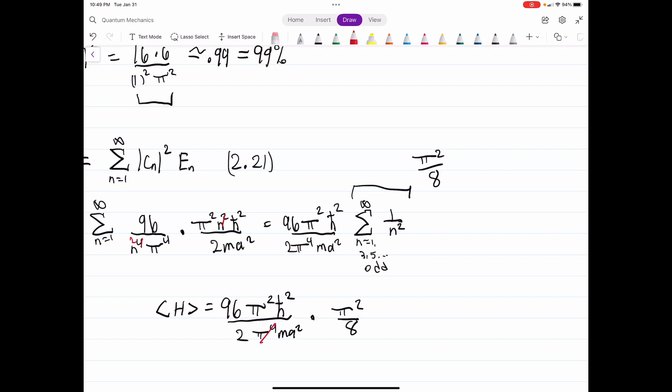So we have 6 h bar squared over m a squared. And that's the expectation value of your energy. The expectation value of your Hamiltonian, dependent on the mass and how big the infinite square well is.